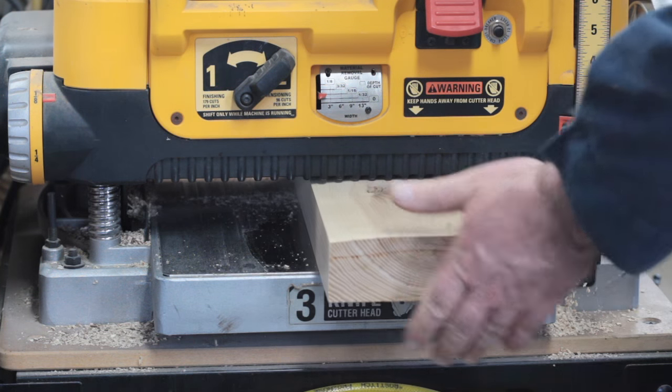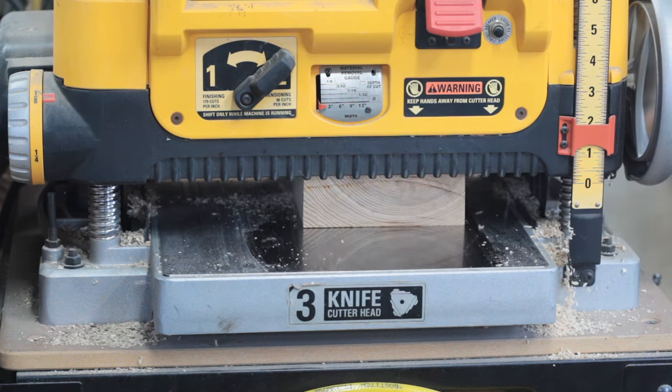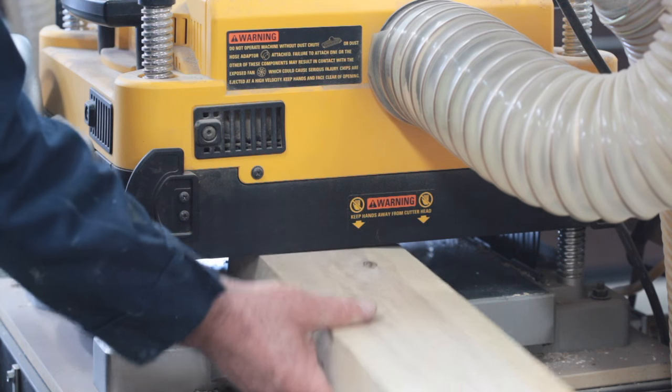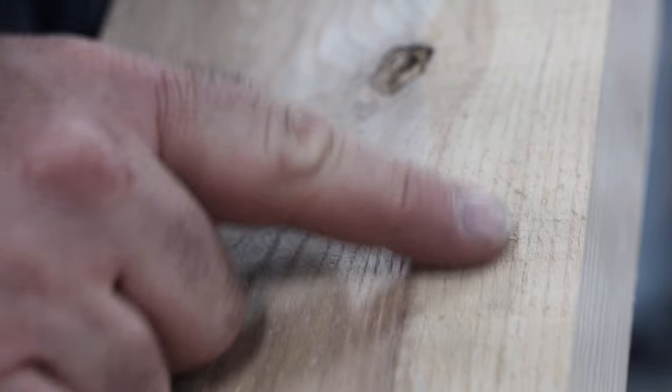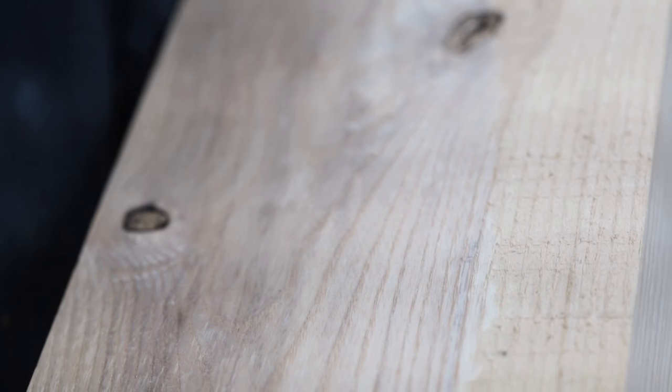If you remember the face we're planing now used to be convex so we're going to be taking wood off the middle of the board and if you look closely you can see how the middle is smooth and the outer edges are still rough. A few more passes will fix that where it's still convexing down a little bit.